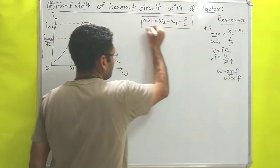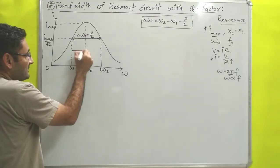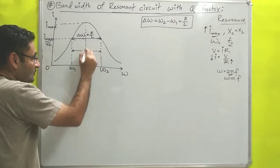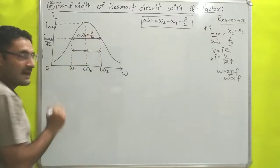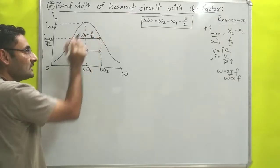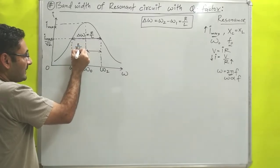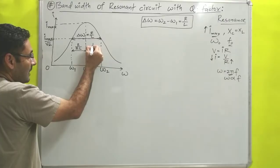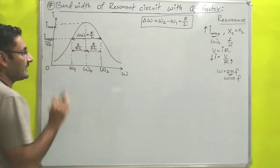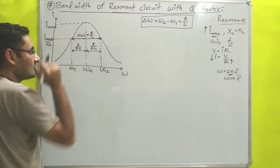The bandwidth R/L is split into two equal distances on either side of omega naught — each distance is R/2L. So omega naught minus R/2L on one side and omega naught plus R/2L on the other, totalling R/L. The distances are equal because the curve is symmetric about the center line.